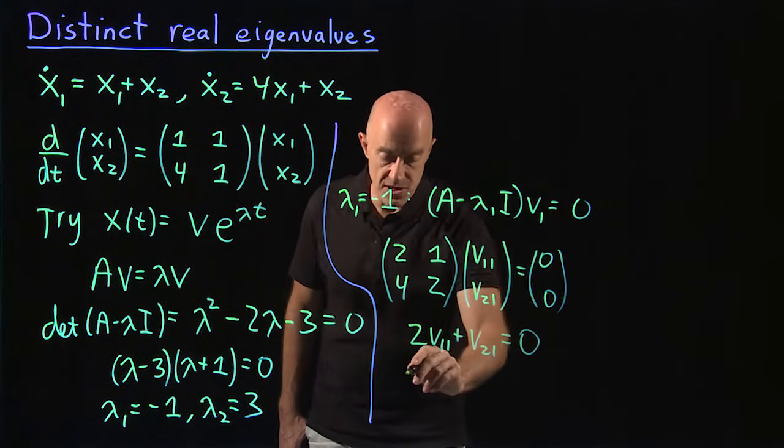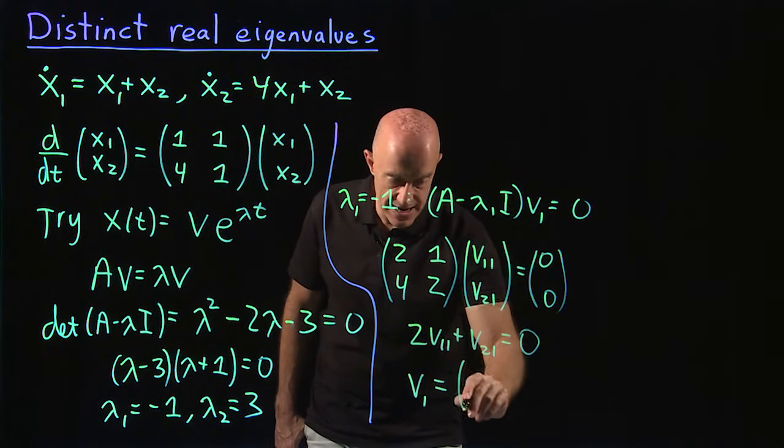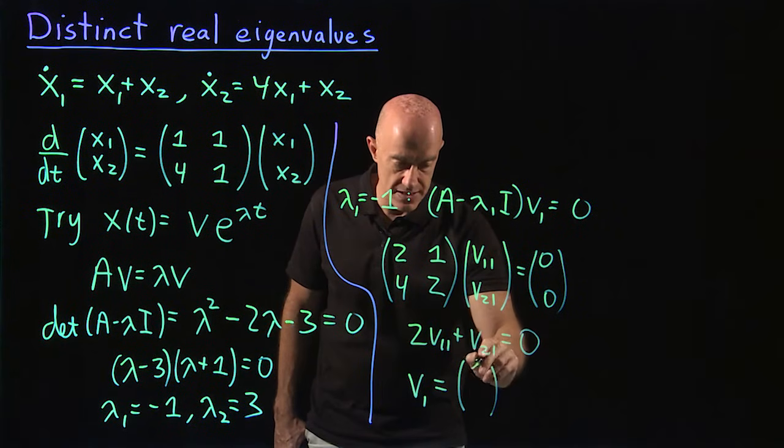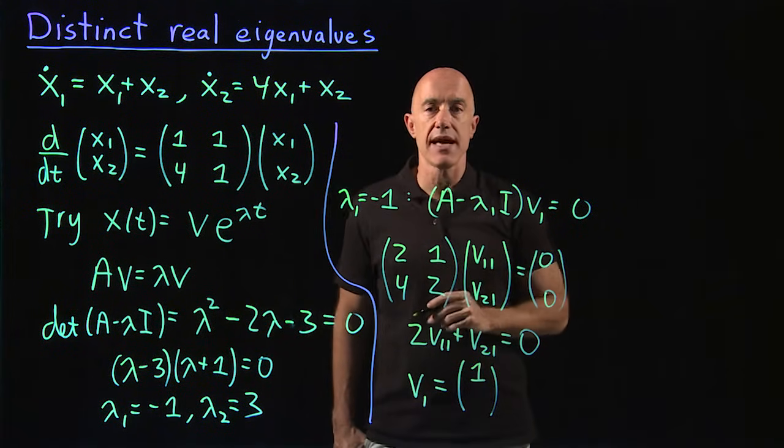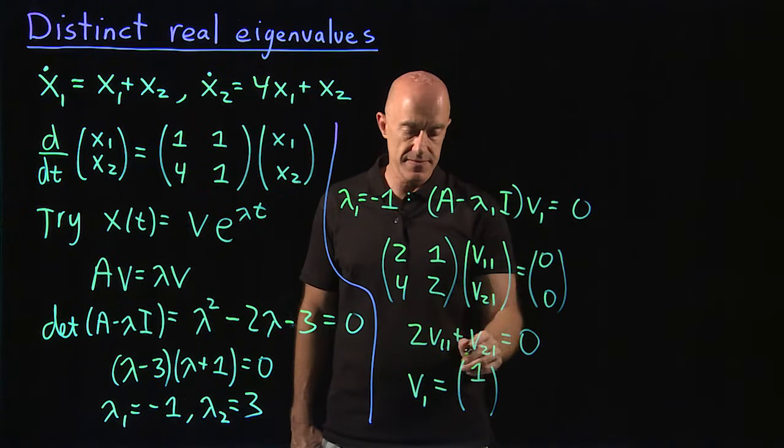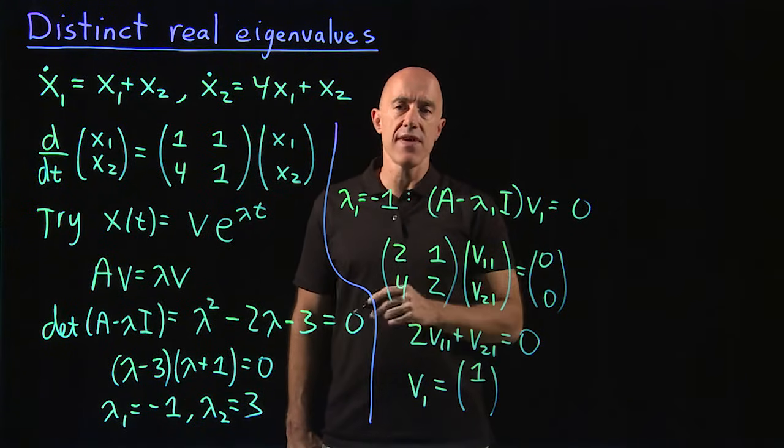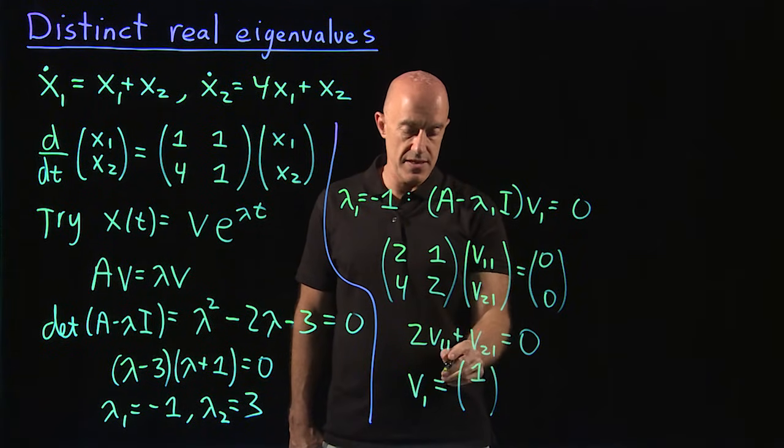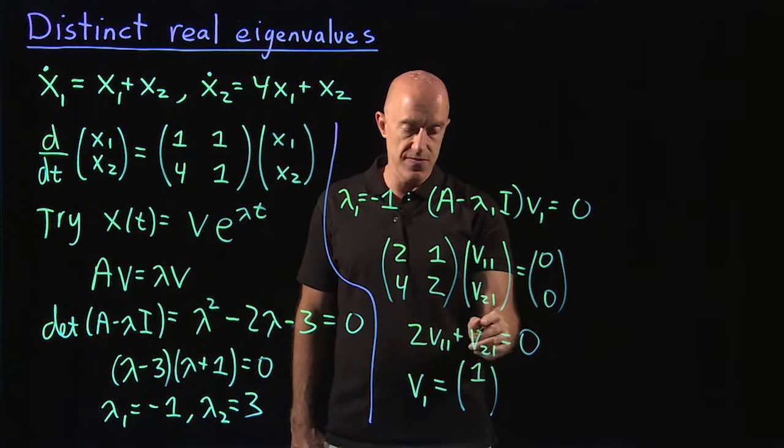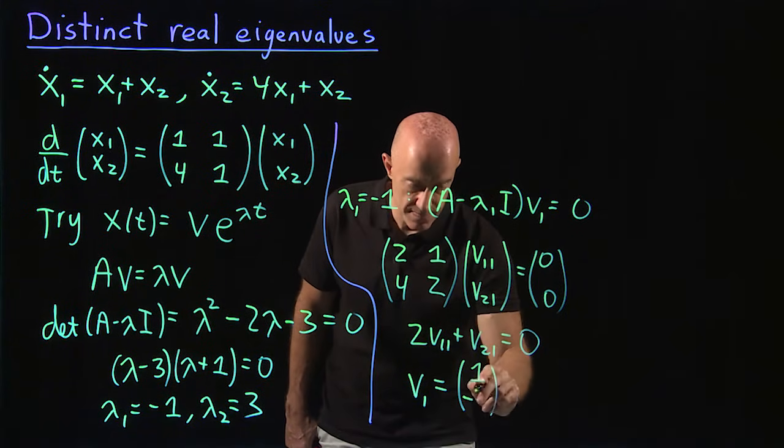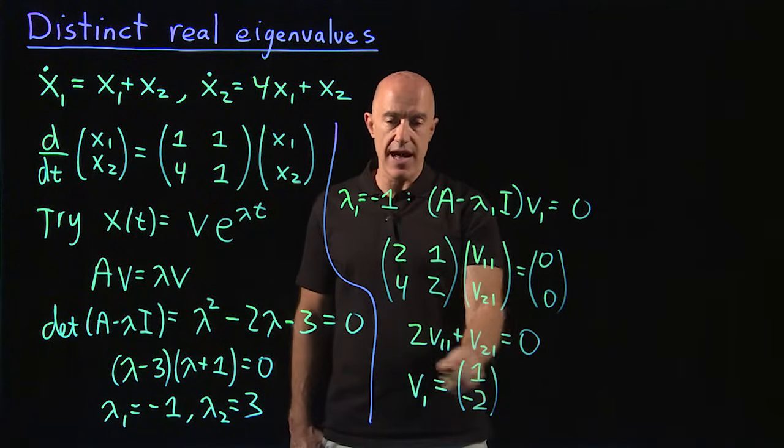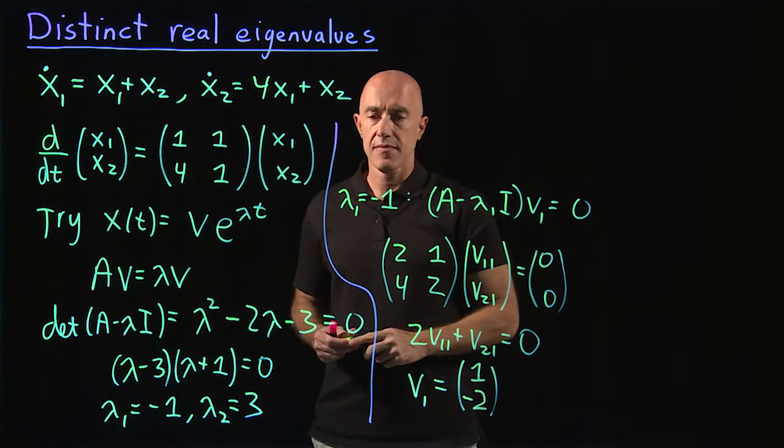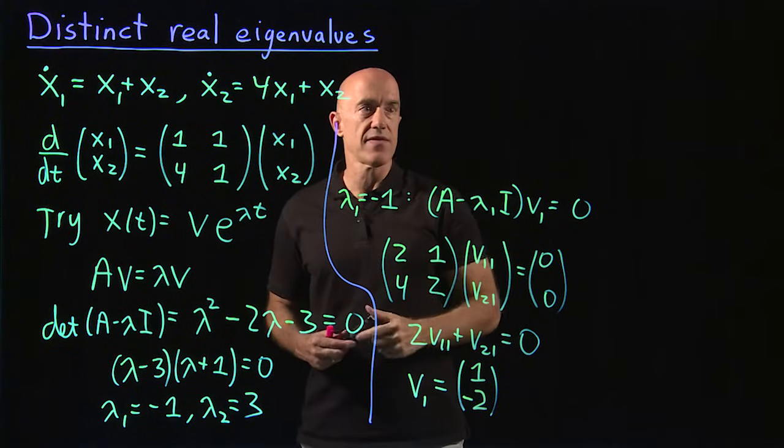And the first eigenvector then we can write as a column vector. We can put v₁,₁ equal to 1. The precise number is arbitrary because an eigenvector can always be multiplied by a constant. So v₂,₁ is equal to minus 2. And that's our eigenvector associated with lambda 1 equals minus 1.